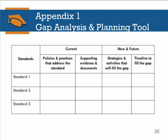The next two columns are the current state. This is where you would document what you're currently doing to address each one of the standards. And not just that, but also to think about what evidence, what data, what documents can you provide that will show, that will demonstrate, that will prove that you're actually doing that.